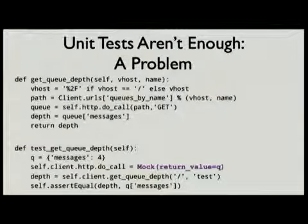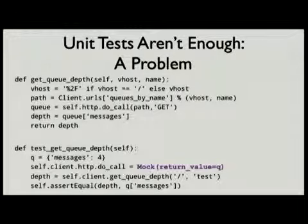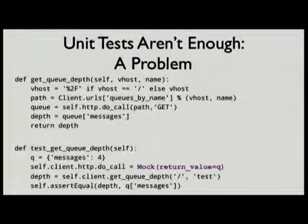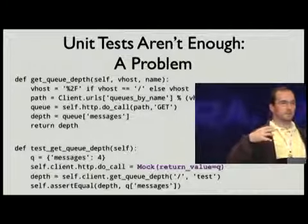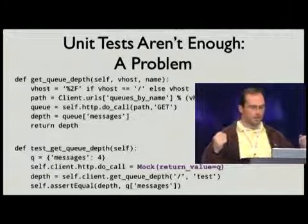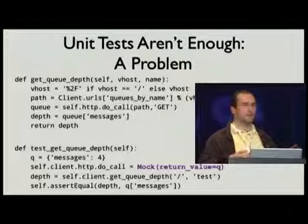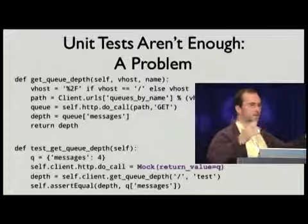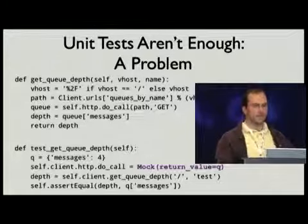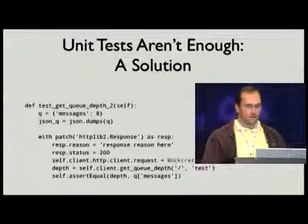Here's a problem with unit tests. I have this method from PyRabbit — it's a module I wrote to provide a wrapper to RabbitMQ's HTTP management API. This is a unit test, and it tests that the code under test does what I expect it to do. But it's not an integration test. So if some part of the API changes, or the signature of the http.do_call method changes, or data changes on the way back, that's not going to be caught by this test. This test will still pass. So you still need integration tests.